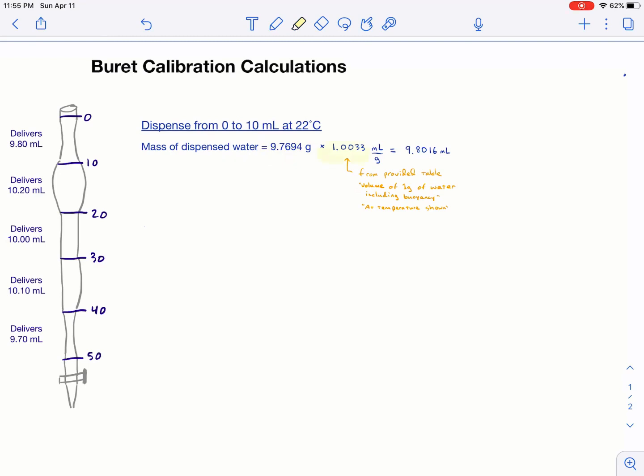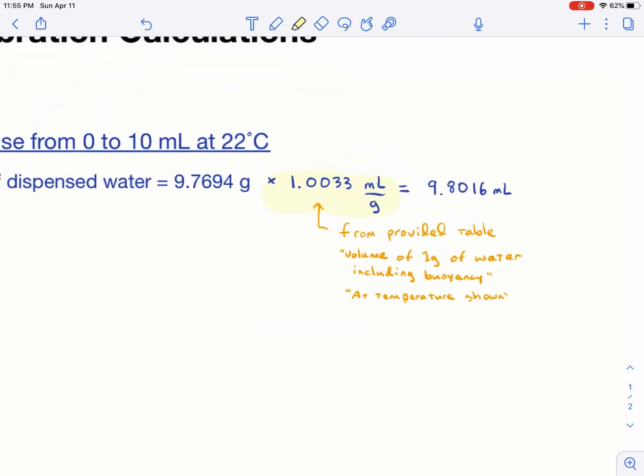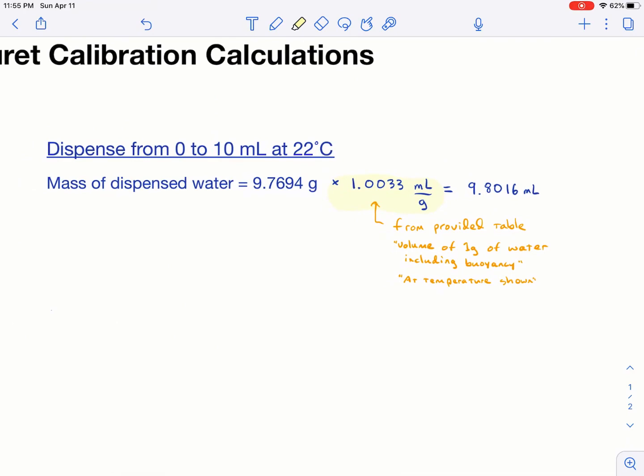And you multiply by the number that we give you that's in the table. And so this provided table has several columns in it. You want the volume of one gram of water that includes buoyancy. So it's an adjustment to the measured mass due to the fact that things float in air. Not very well but they float a little bit. And we don't want the temperature corrected for different expansion and contraction of glass. So we just want the one that says at temperature shown and not converted to a different temperature. So you put that number in. Do keep in mind this number is backwards. It's not density. I shouldn't say it's backwards. It's an inverted density. And so you have milliliters per gram. So all you need to do is just multiply that thing.